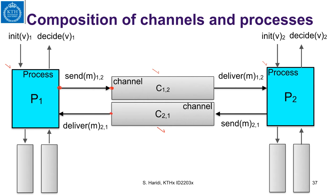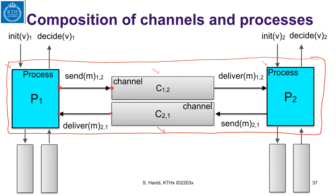We also match the output of channel C21, which is a deliver, to the input of that process. The idea of composition is matching output actions of one component with the corresponding input actions of other components and putting the different components together. The state of the whole system, or the state of the composition, will be a vector of the states of all components together, with the start state being a vector of the start state from each component.